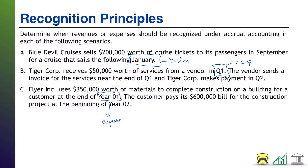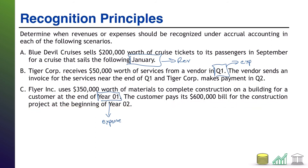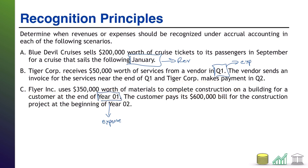Now let's talk about the revenue. The customer pays its $600,000 bill for the construction project at the beginning of year two, so you're getting paid in year two. But when did you actually build what the customer is paying you for? Flyer Inc. completed construction in year one. No matter when the customer pays you, once you have done the job — in this case, completing the construction — you have earned the revenue. Therefore, both the revenue and the expense get recognized in year one in this scenario.